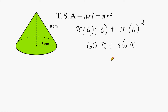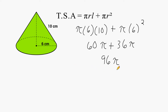At this step we have two terms: 60π and 36π. We combine like terms, and 60π plus 36π gives a total of 96π. The reason to solve in terms of pi first is that if we substituted 3.14 at the beginning, we would have two decimal values to contend with. This way, we only use 3.14 one time, which reduces the chance of a calculation error.